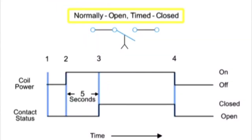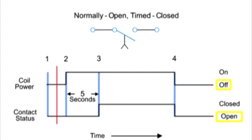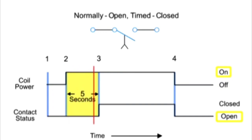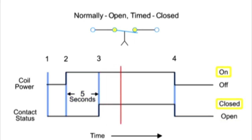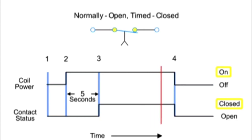First, we have the normally open, timed closed — NOTC — contact. This type of contact is normally open when the coil is unpowered or de-energized. After the coil has been continuously powered for a specified amount of time — in this example, five seconds — the contact is closed. The contacts will immediately open when the coil is de-energized.